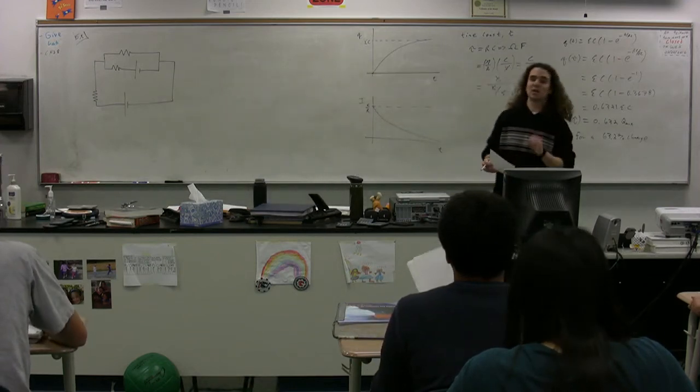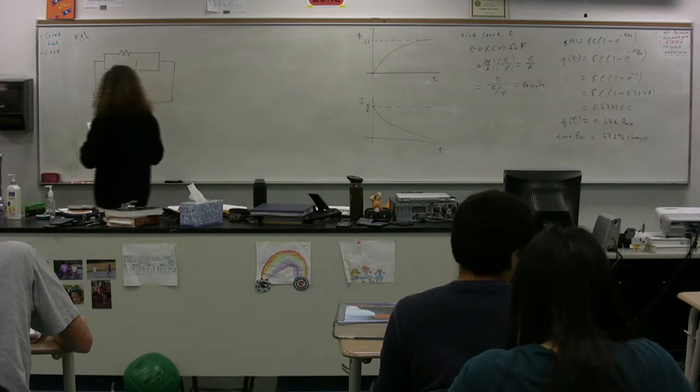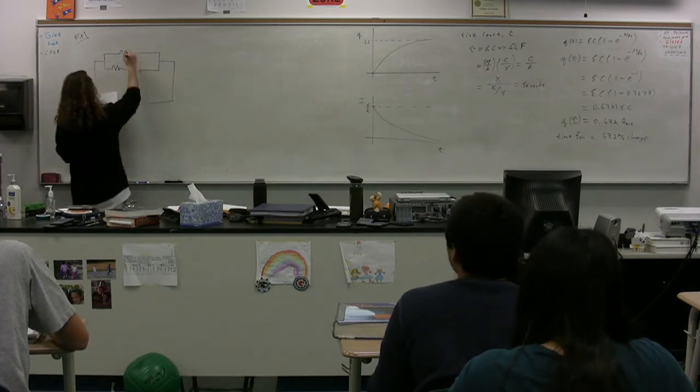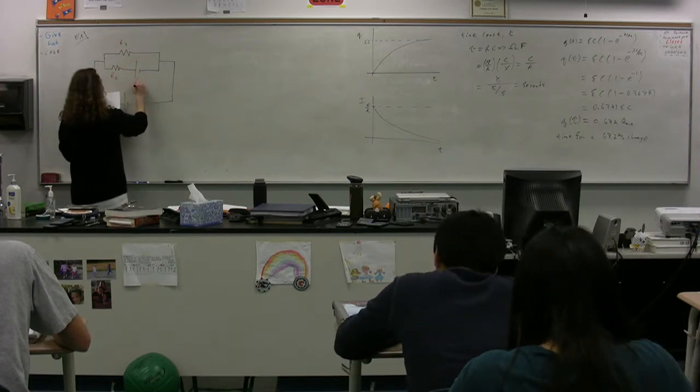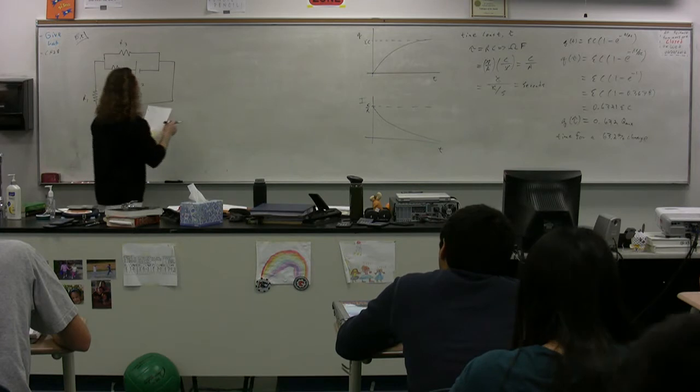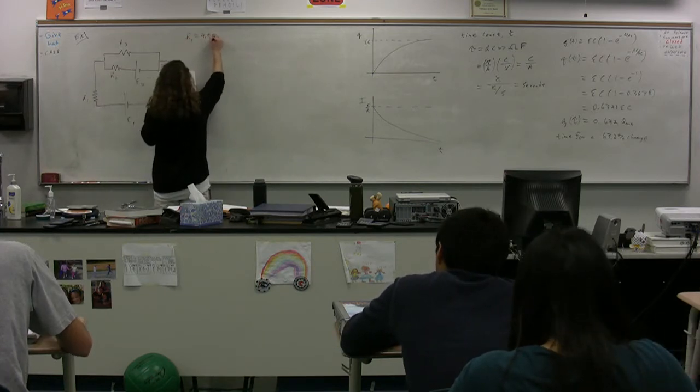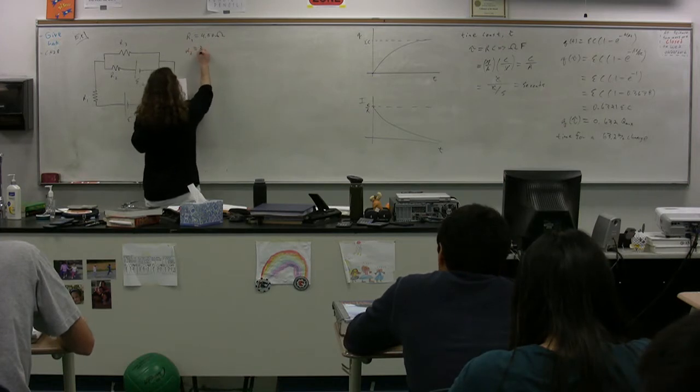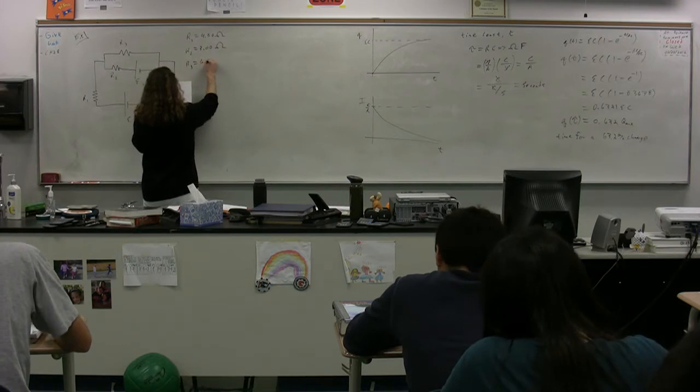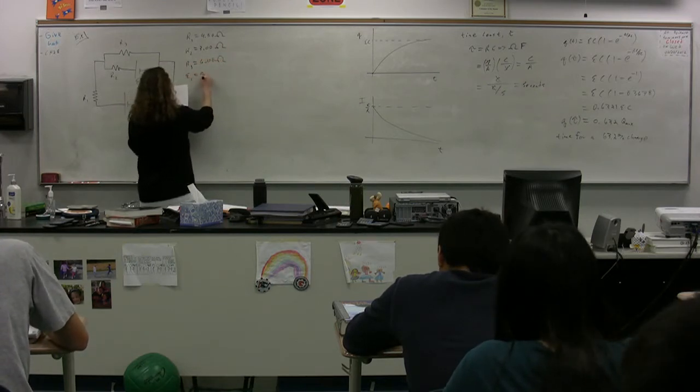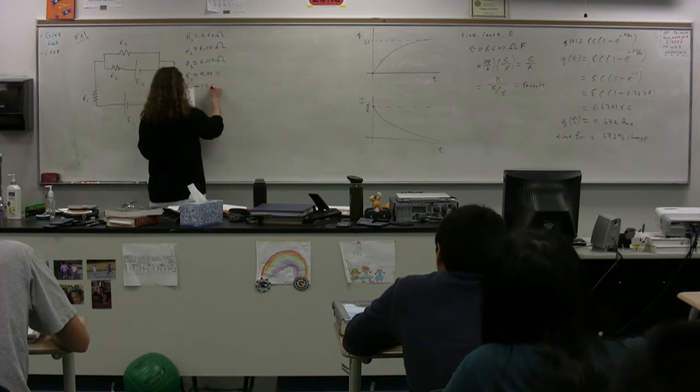All right, here we go. We have resistor 1, we have resistor 3, resistor 2, EMF 2, and EMF 1. The variables we know: resistance 1 is 4.50 ohms, resistor 2 is 3.00 ohms, resistor 3 is 6.00 ohms, EMF 1 is 9.00 volts, and EMF 2 is 12.0 volts.